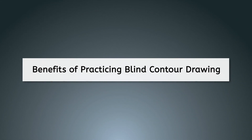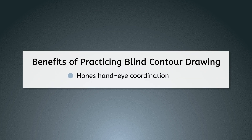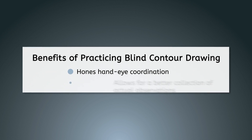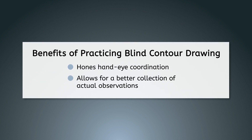As mentioned before, blind contour is supremely beneficial in honing your hand-eye coordination. Blind contour drawings force you to let go of any preconceived notions you may have about how objects should be drawn. You may already think you know what something looks like, but this technique makes you look and draw only — not think. This fundamentally changes how you see and better allows you to collect actual observations when drawing from life.